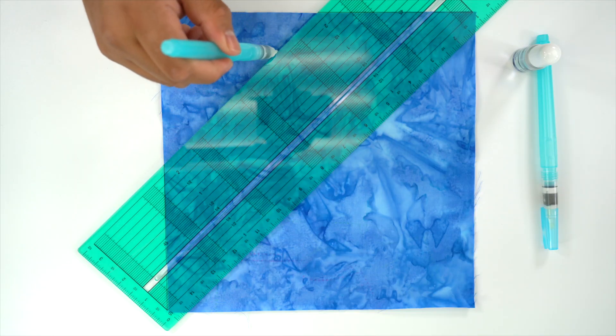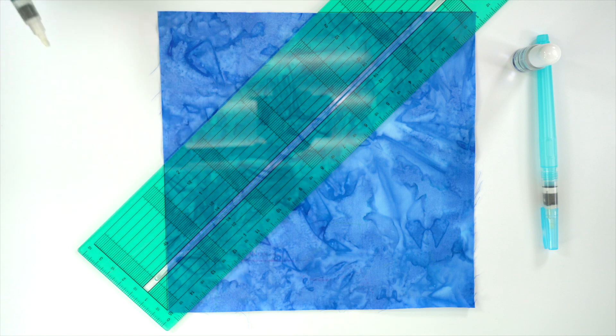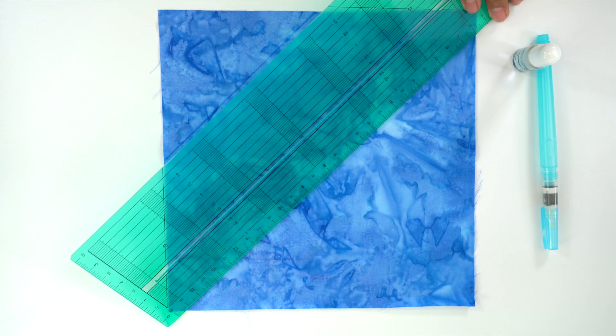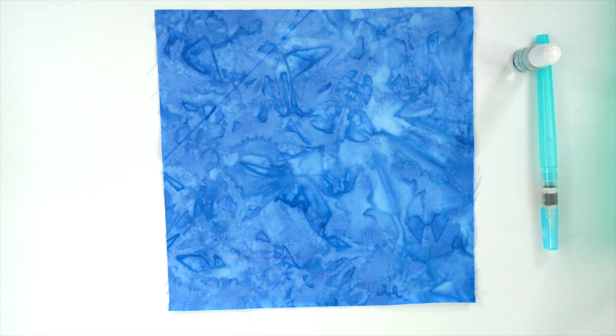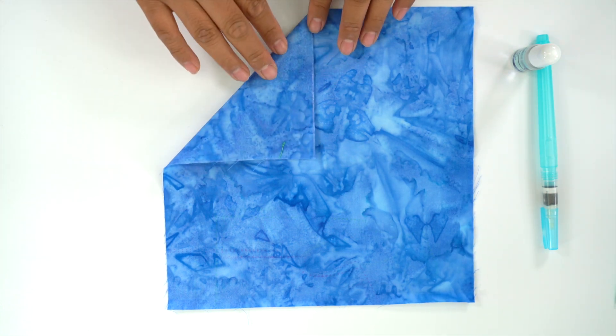An important part of many sewing projects requires working with crisp, sharp pressed seams during the construction process. How do we get those perfect creases? We can press them with an iron or we can use Clover's fabric folding pen. Simply finger press to suit and we're done.